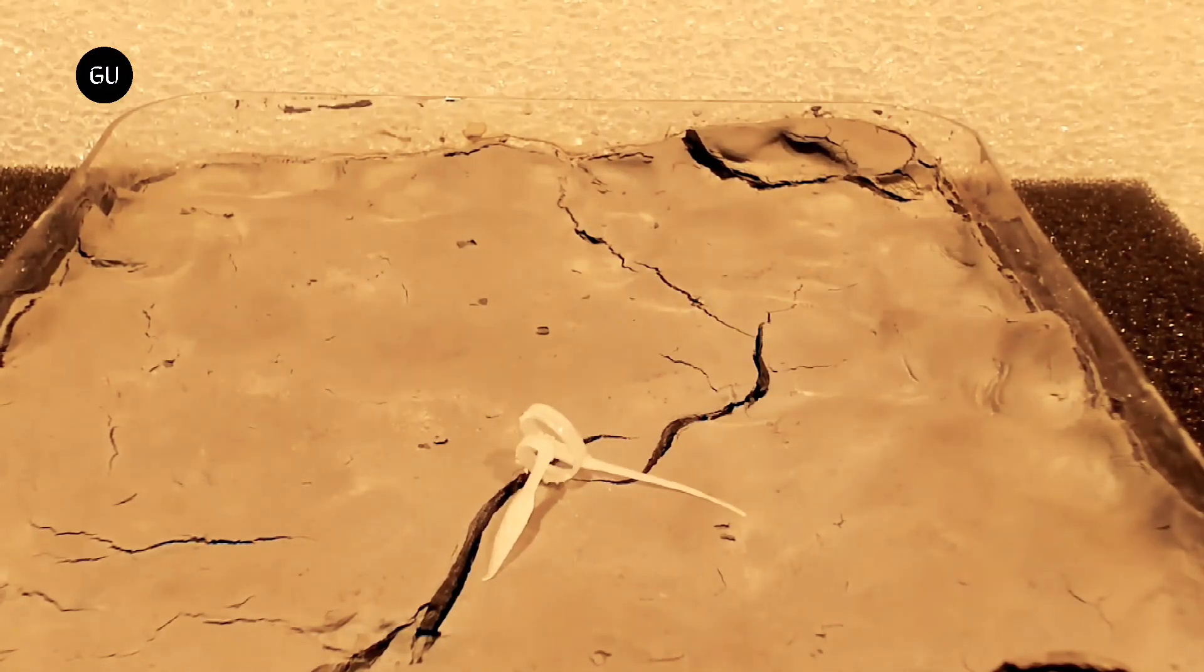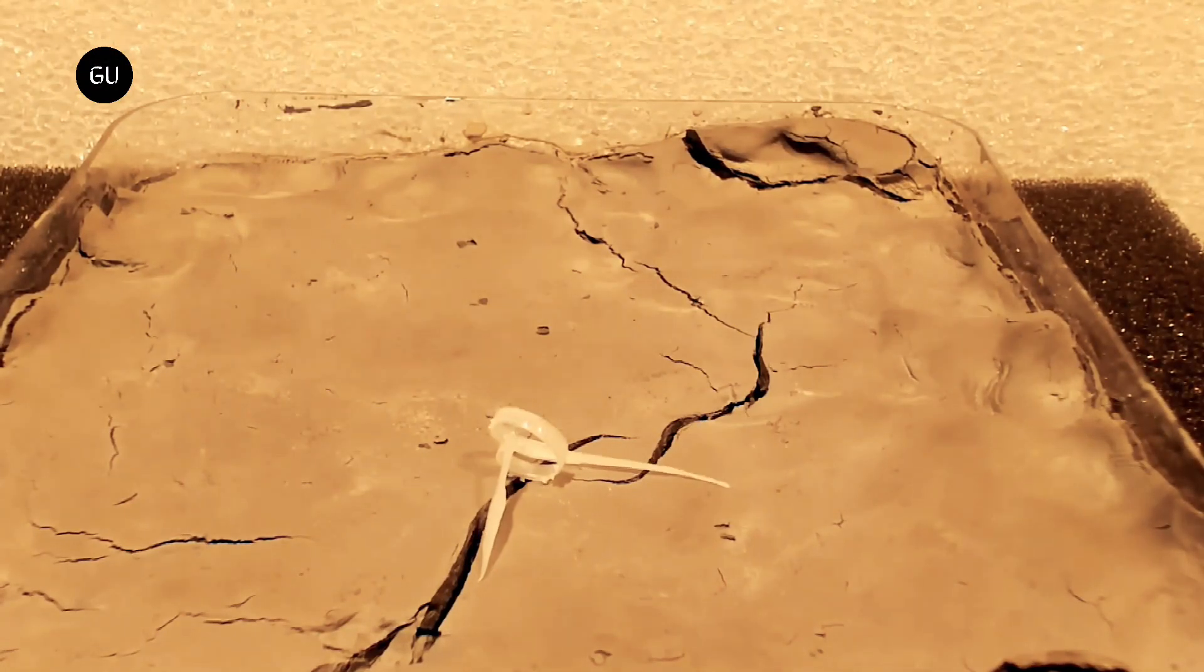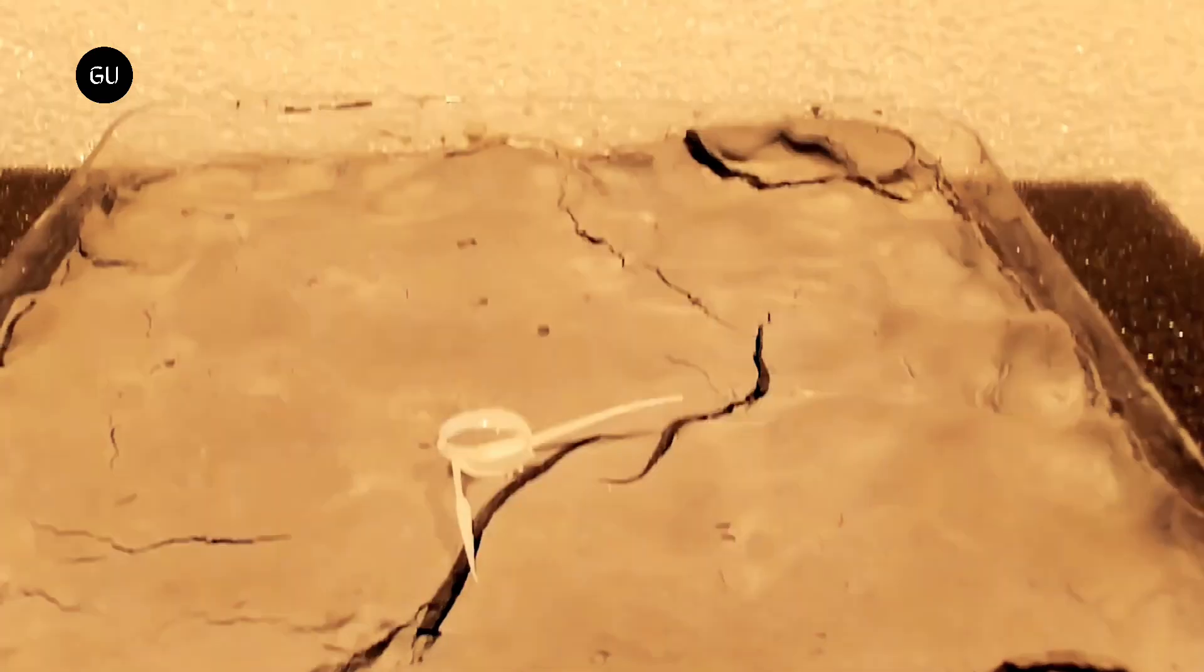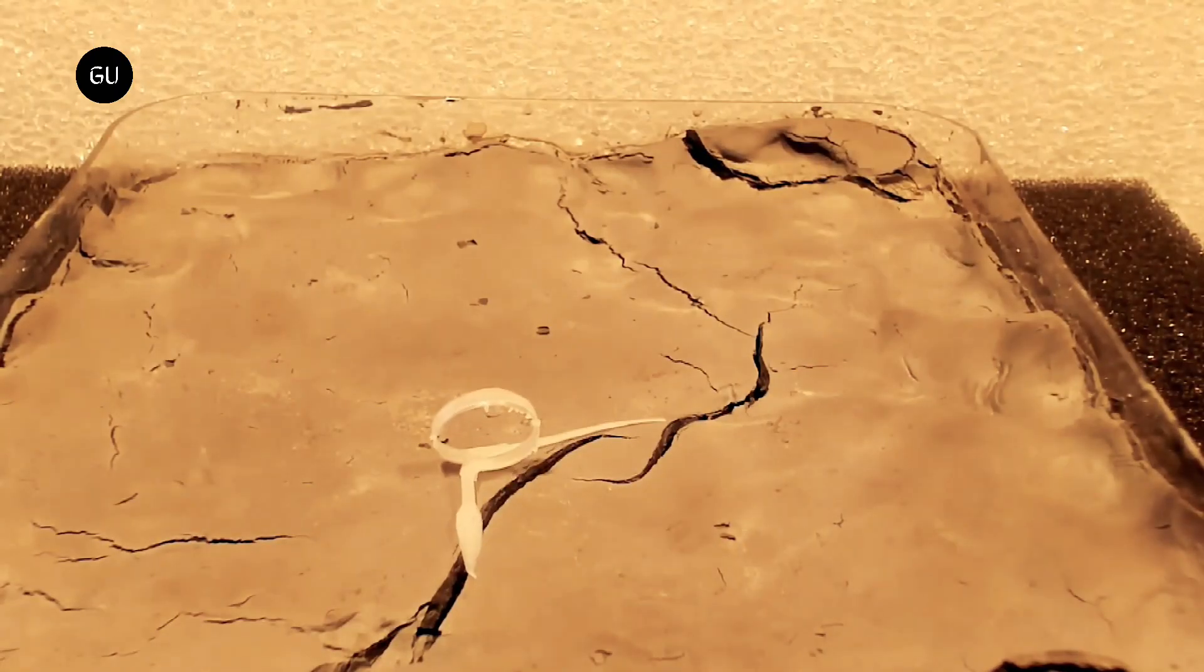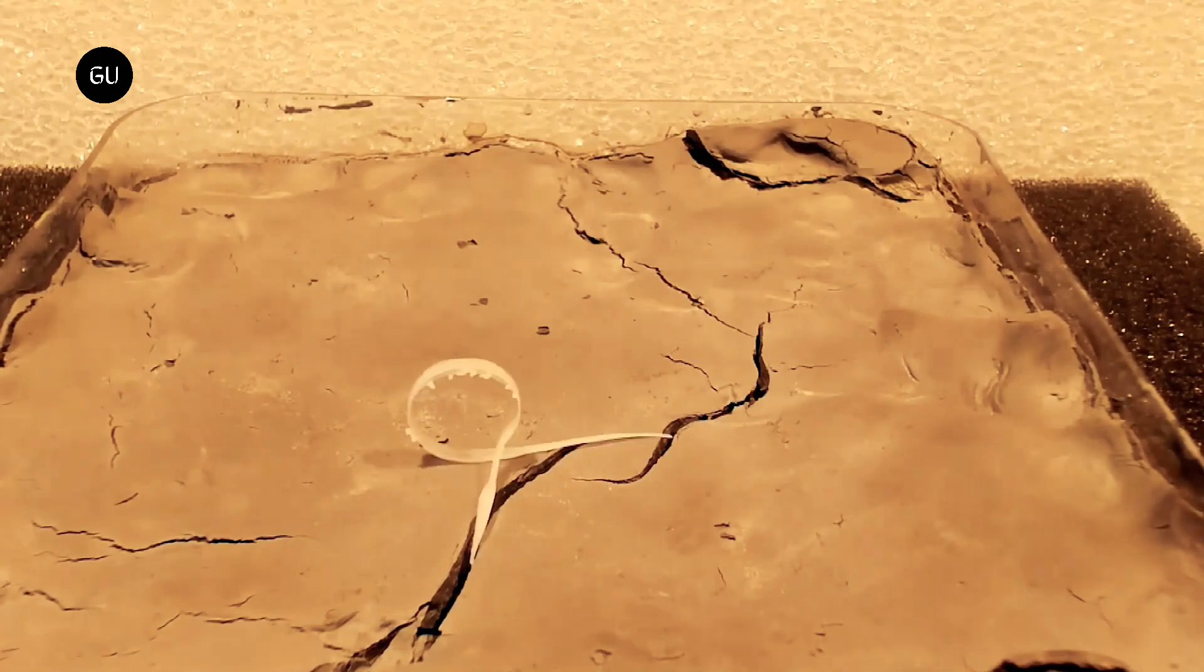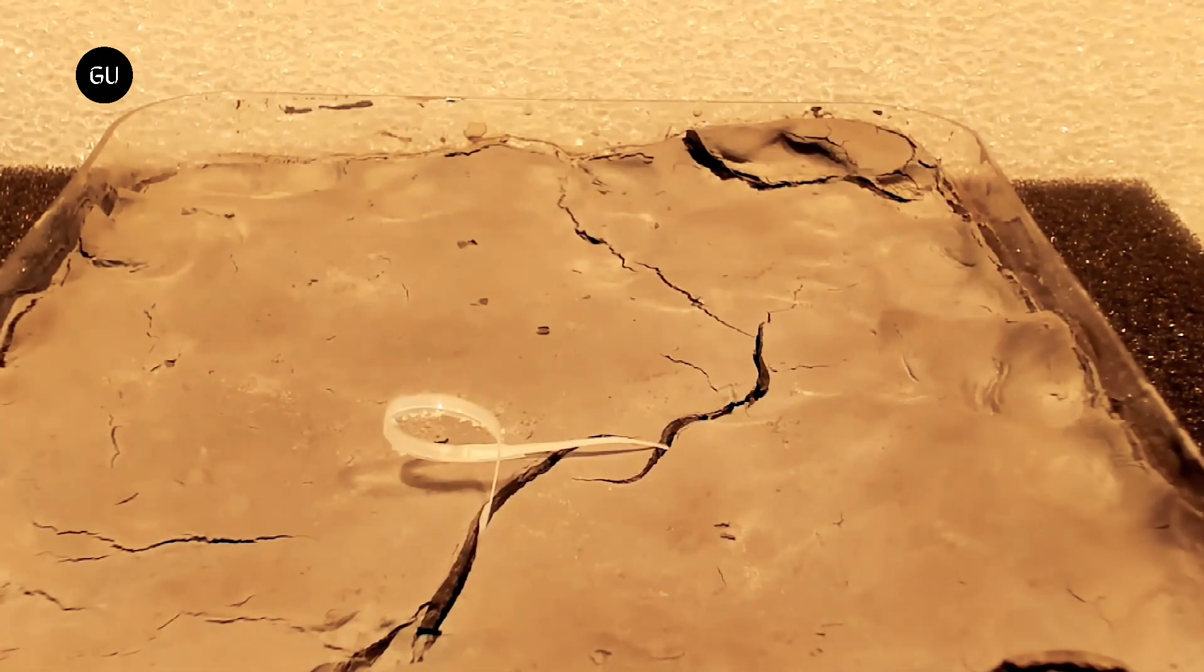For the first time, researchers have created a 3D printed biodegradable seed robot called i-seed. One of the most notable characteristics of this seed robot is its ability to move within the soil without the use of batteries or any other power source.